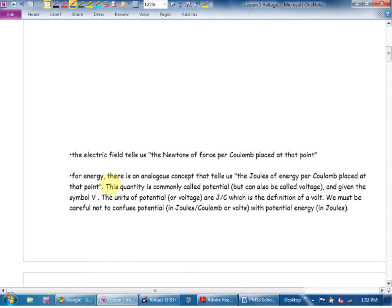Electric field is how many newtons of force any coulomb at that location experiences. Voltage tells us how many joules of energy any coulomb at that location has. We call it voltage. Well, actually, we don't. It's commonly called potential. I prefer the term voltage because, listen closely to the English here. The potential tells you how much potential energy you have per coulomb.